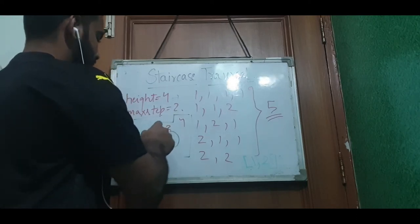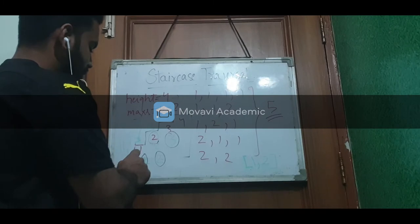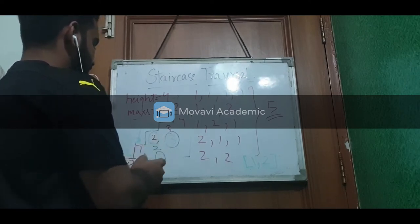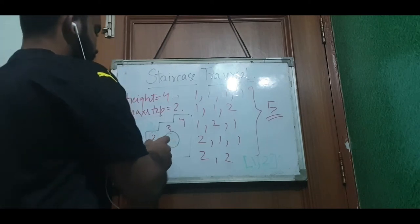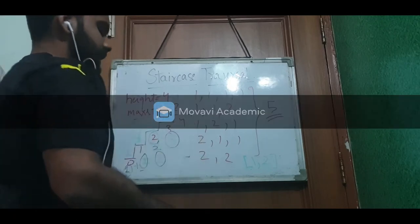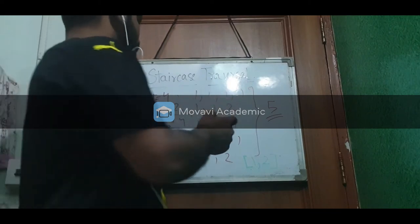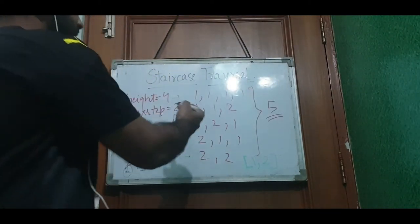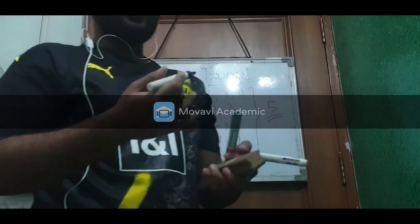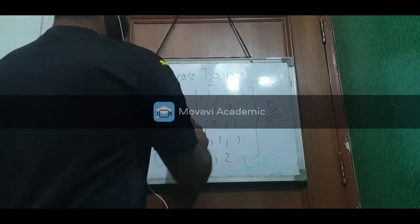The base cases are established by the maximum steps. The common pattern we see is that the number of ways for step N equals the ways for step N-1 plus the ways for step N-2, when max step is 2. For step 3, we look at step 2 and step 1 and add them. Similarly for step 4 we look at step 3 and step 2. Adding those gives us 5 ways total for height 4 with max step 2.